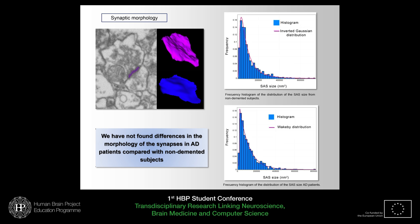To perform the morphological analysis, we used the synaptic apposition surface — meaning that the pre- and post-synaptic membranes are so close and their areas are so similar that they can be simplified into a unique structure called the synaptic apposition surface. In both groups, the majority of synapses presented a small size, lower than 300,000 square nanometers. Again, we didn't find a difference in synaptic morphology between Alzheimer's disease patients and subjects with no neurological alteration.